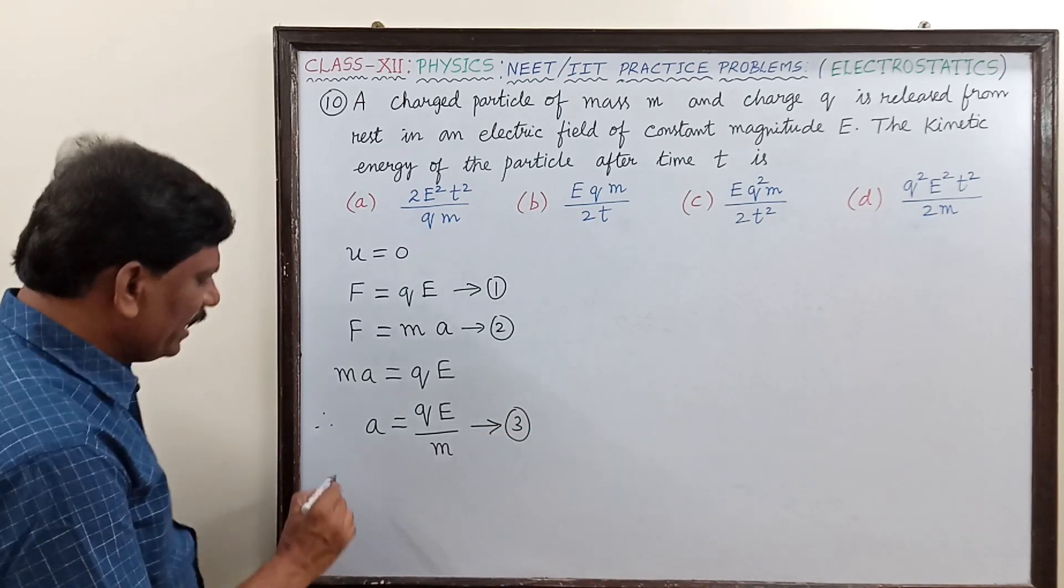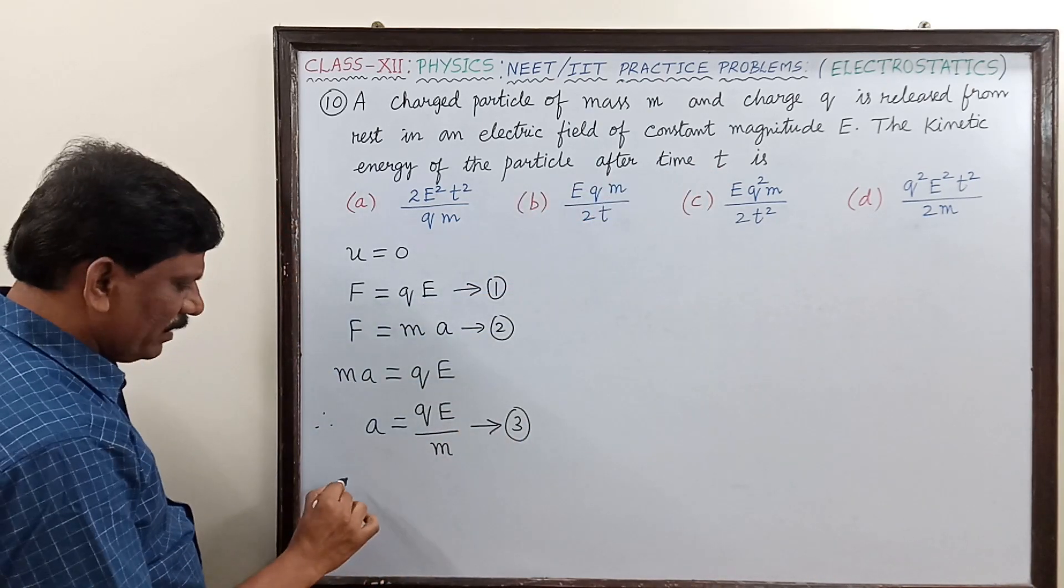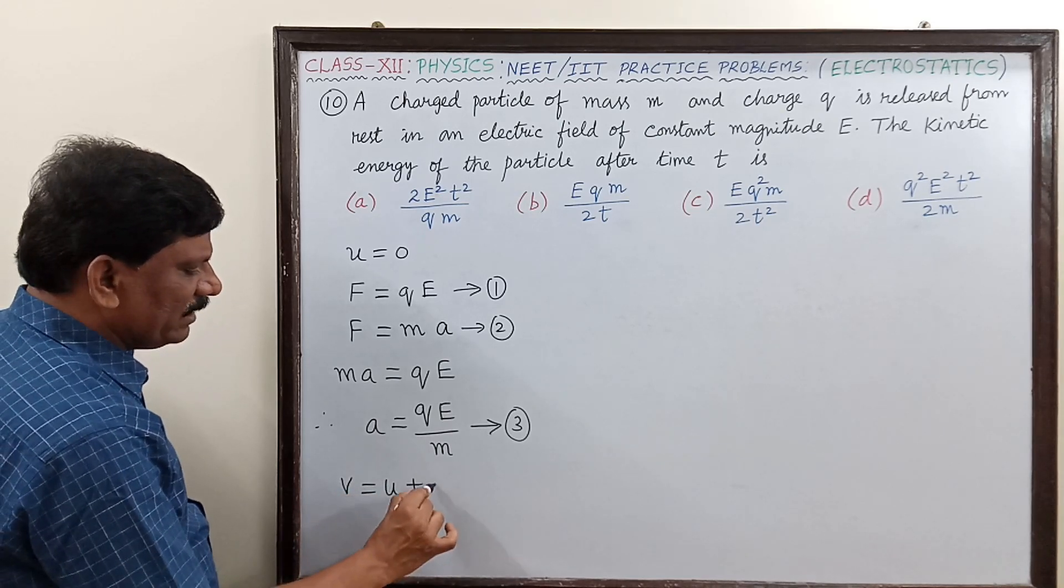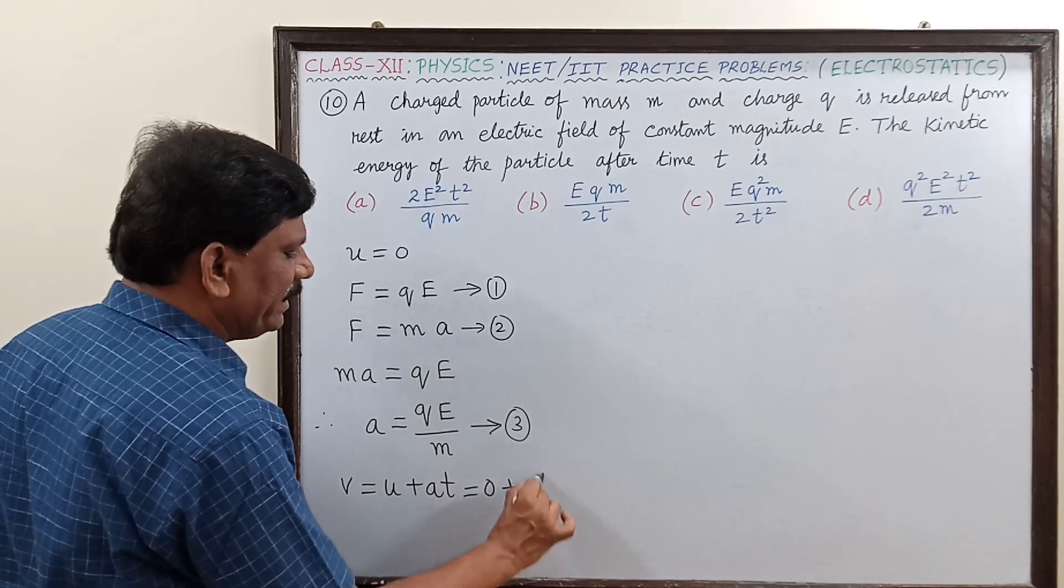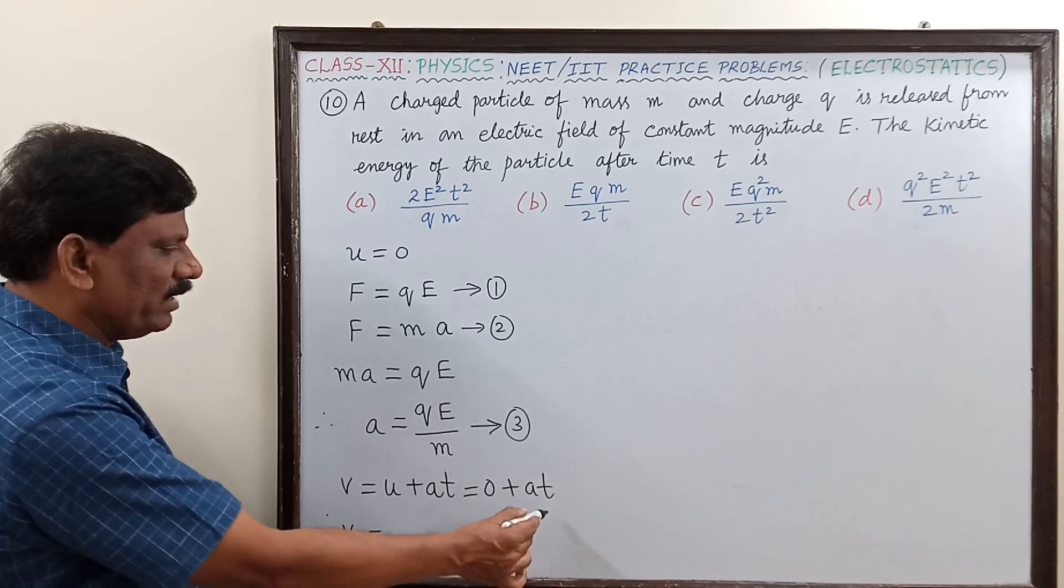Now from equations of motion, what will be its velocity after time t? The velocity is v equals u plus at, which equals zero plus at. Therefore, velocity v equals at.